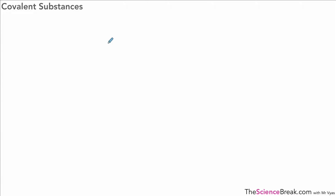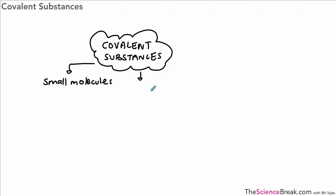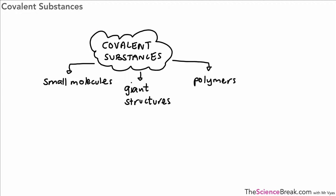Today we're going to look at covalent substances — specifically giant covalent structures and their properties. But before we do that, let's remind ourselves of the different covalent substances we need to know about. The first is small molecules, which we've already covered in a previous video. We also have giant covalent structures, which we're looking at today, and polymers, which is the topic for another video.